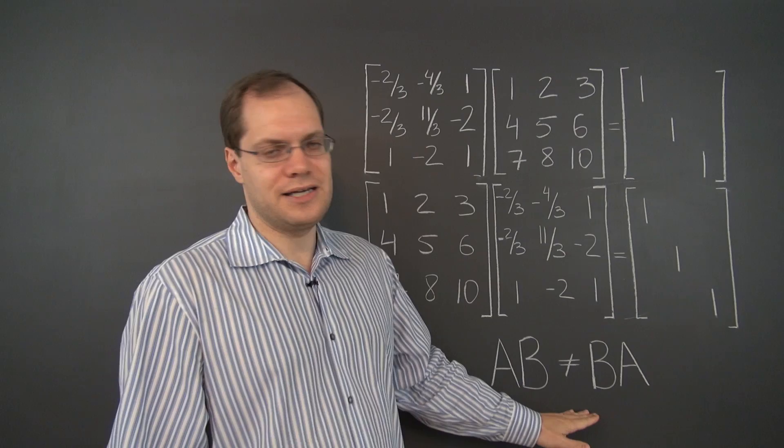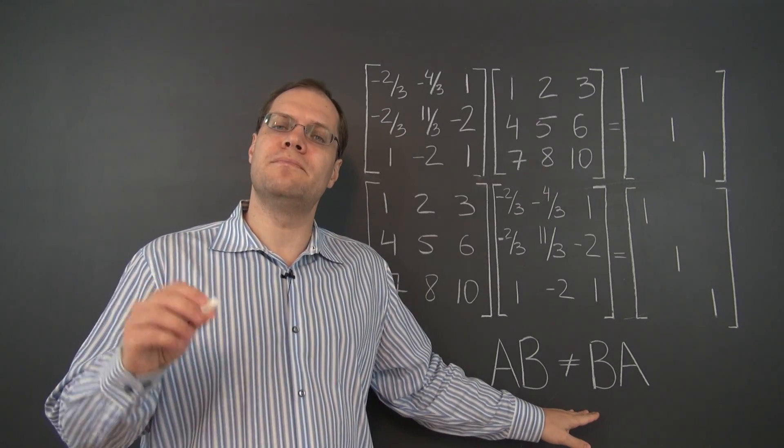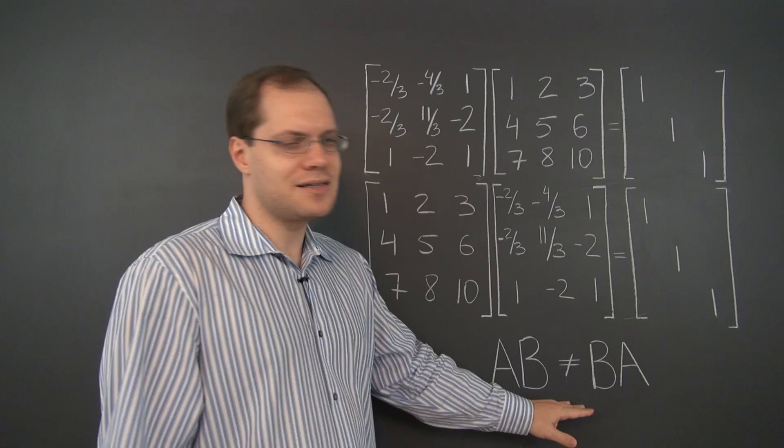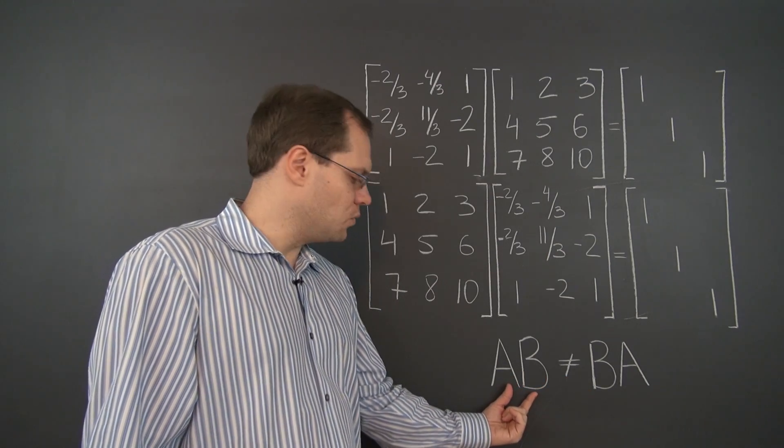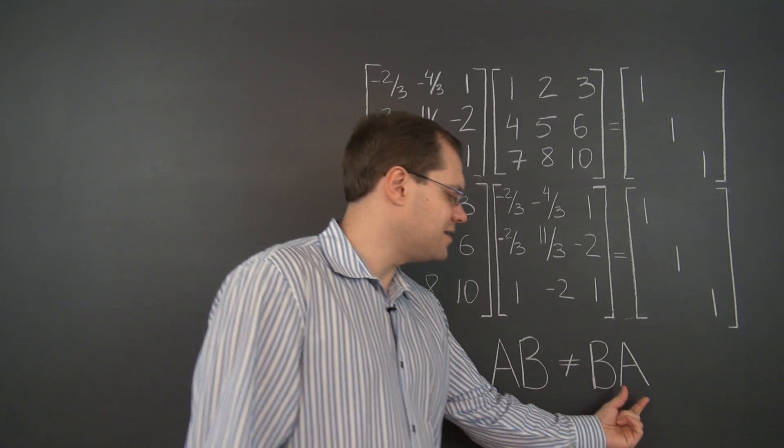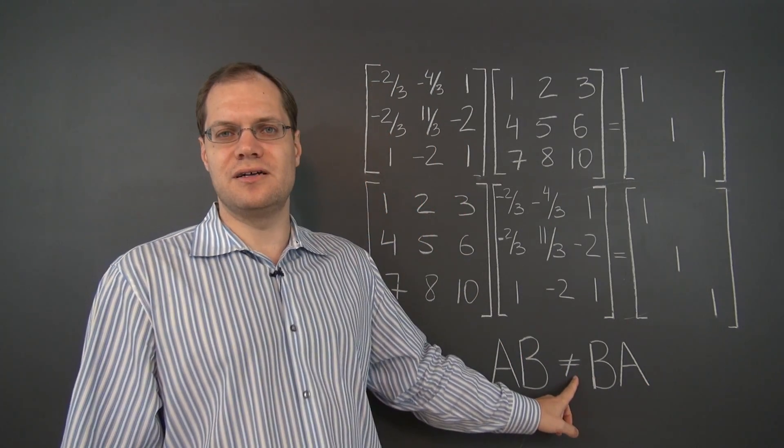Here's why it's surprising. It's surprising because we know that matrix multiplication is non-commutative, that generally multiplying two matrices in this order and then in the opposite order leads to different results.